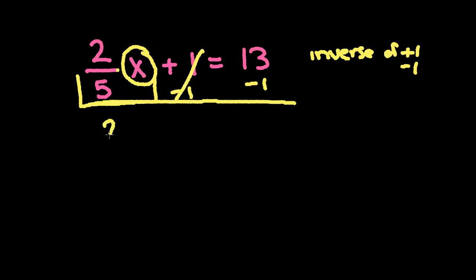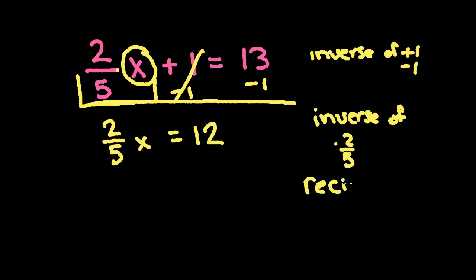So we're going to carry down the 2 fifths x. And 13 minus 1 is 12. Now we need the inverse of a fraction. Inverse of times 2 fifths. And we talked about this last time, that the inverse of times 2 fifths is the reciprocal fraction.